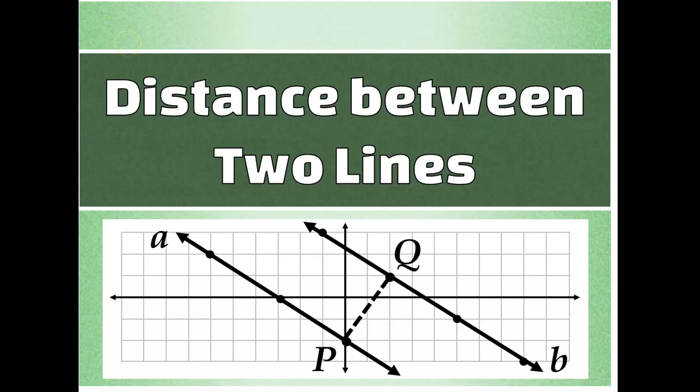Let's talk about how to calculate the shortest distance between two lines. It's important to note that the lines must be parallel to each other, because if they're not parallel, then they would have to intersect, so you could find that shortest distance to be zero at the point of intersection.